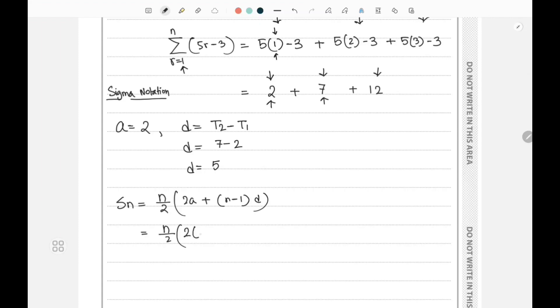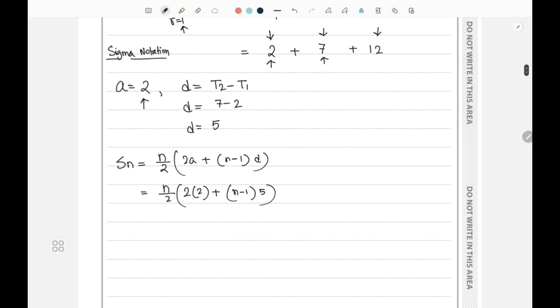Alternatively, n divided by 2 times (2a + (n-1) times 5). This becomes n divided by 2 times (4 + 5n - 5), which equals n divided by 2 times (5n - 1). And we have shown this.